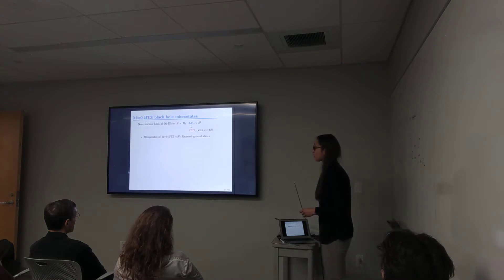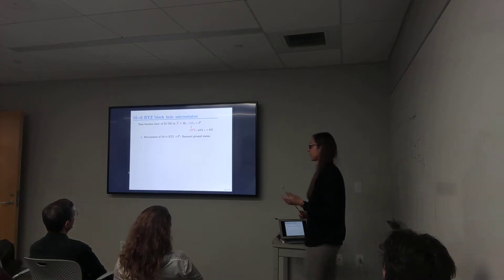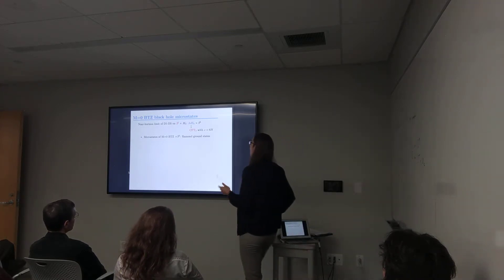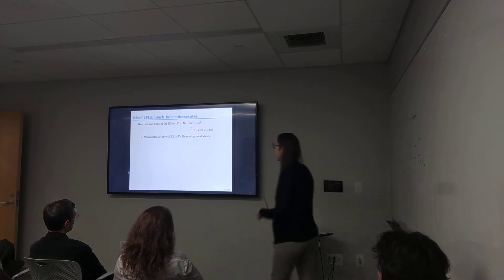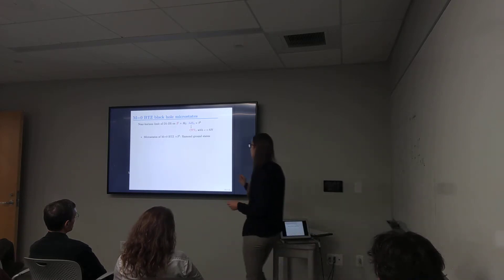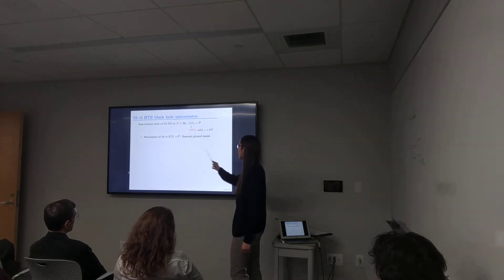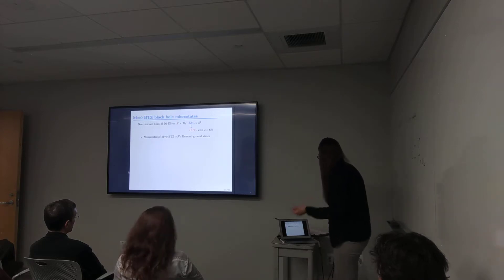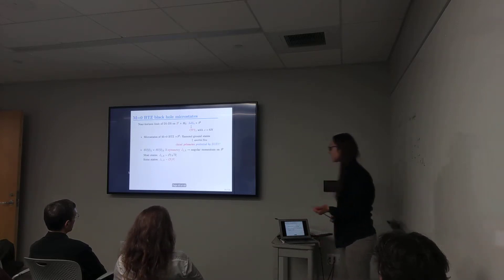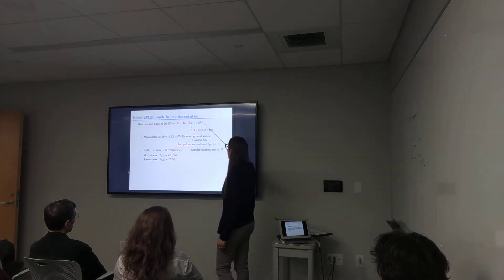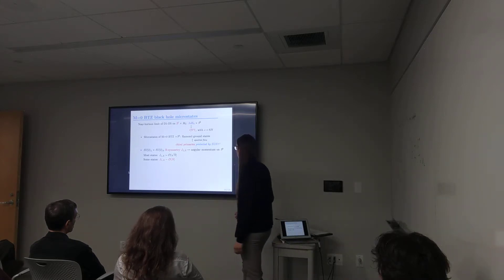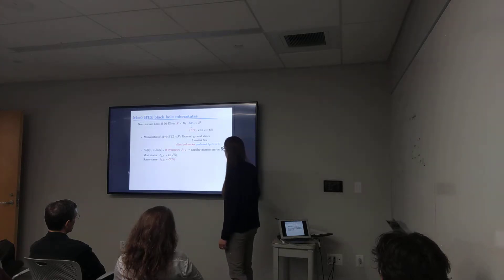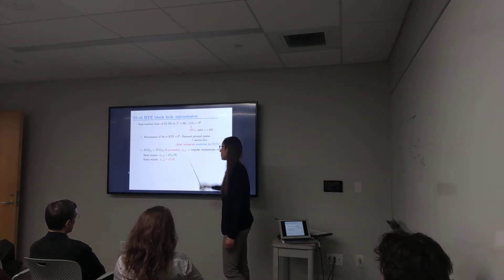There are two things I need to know about this system in order to compute the average relative entropy that tells me about distinguishability. First, for the D1-D5 system, the corresponding black hole — called the BTZ black hole — has known microstates, which go under the fancy name of fuzzball states. There is a degeneracy of these fuzzball states that gives rise to the entropy. The other thing is that the sphere plays a very important role: you can put angular momentum on the sphere, and there are two types — left and right moving angular momentum.